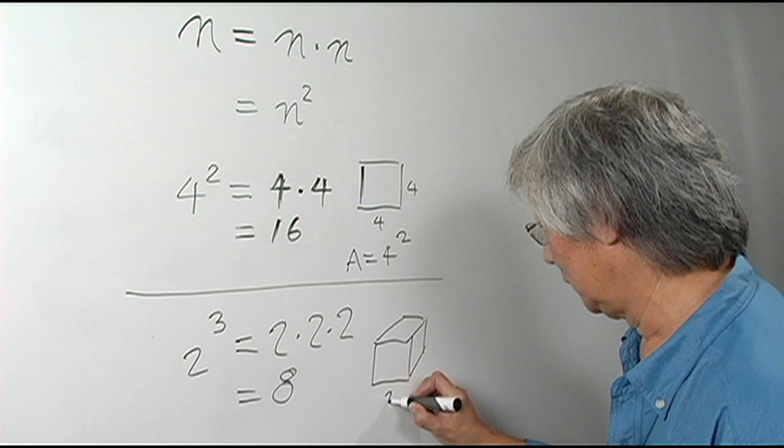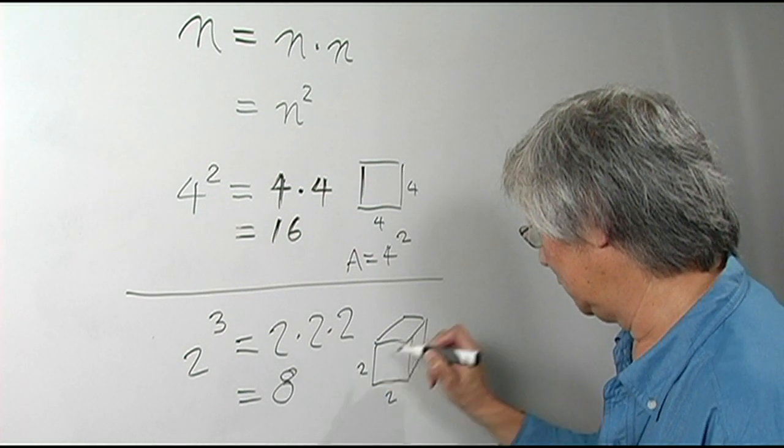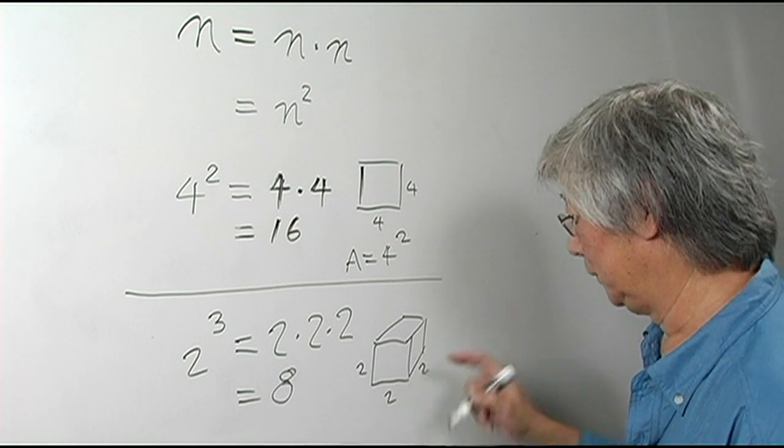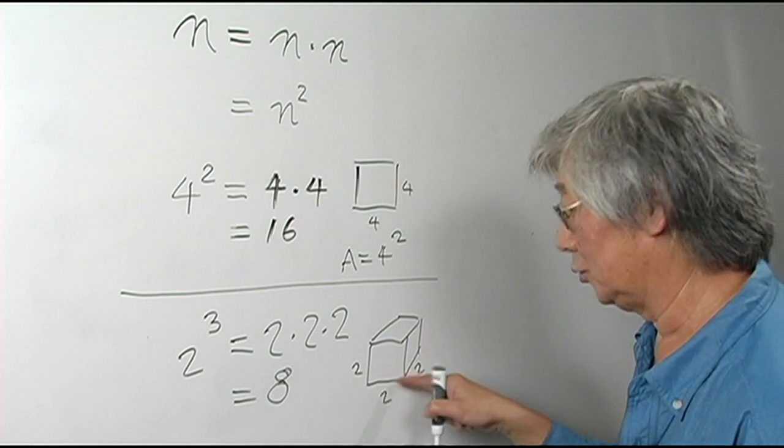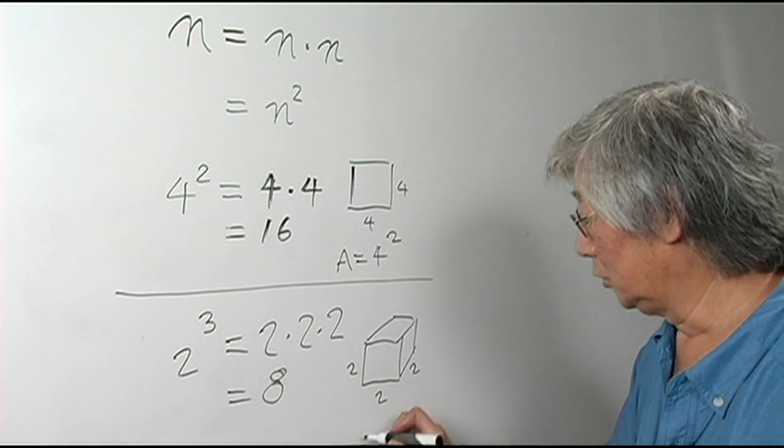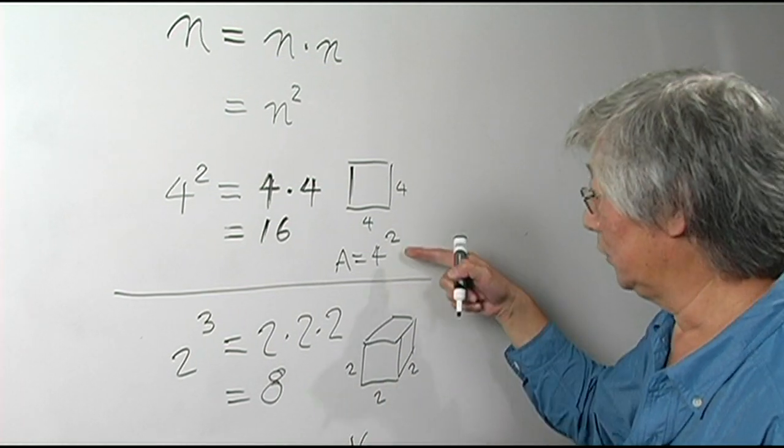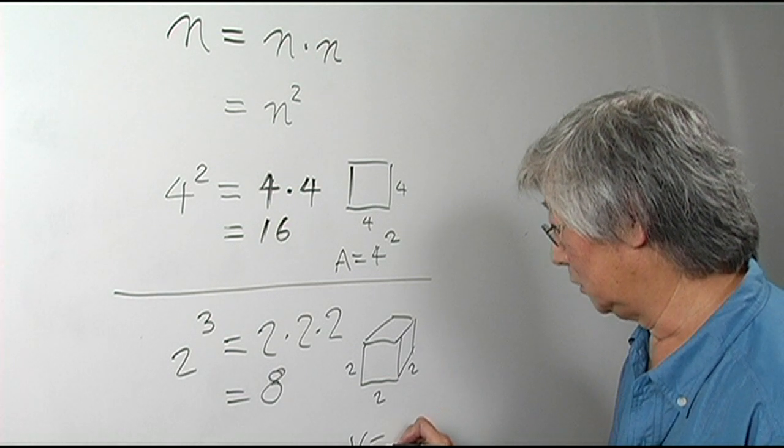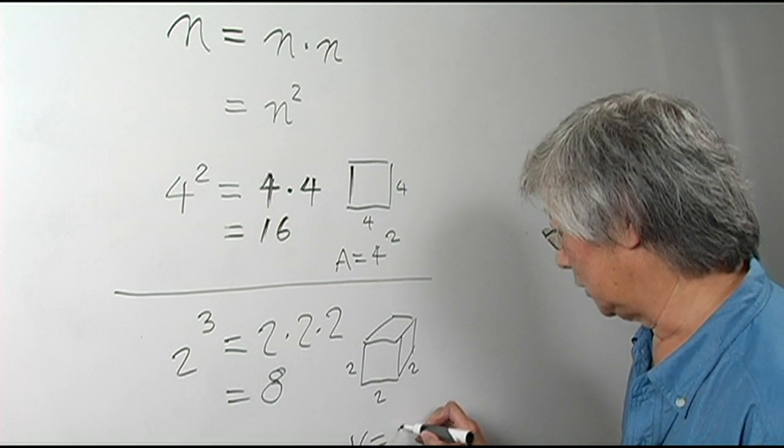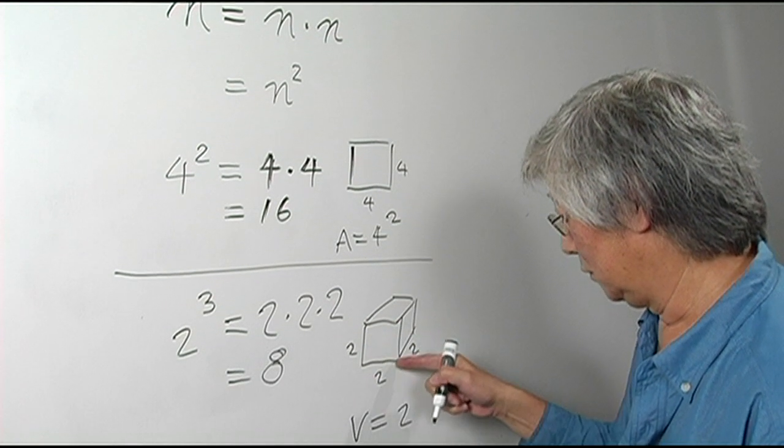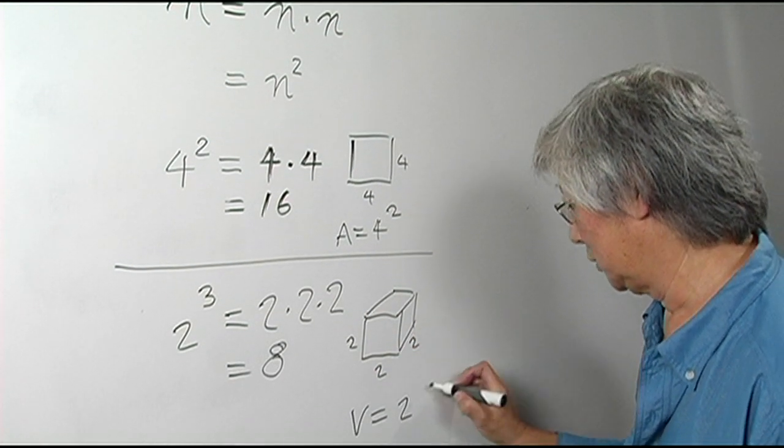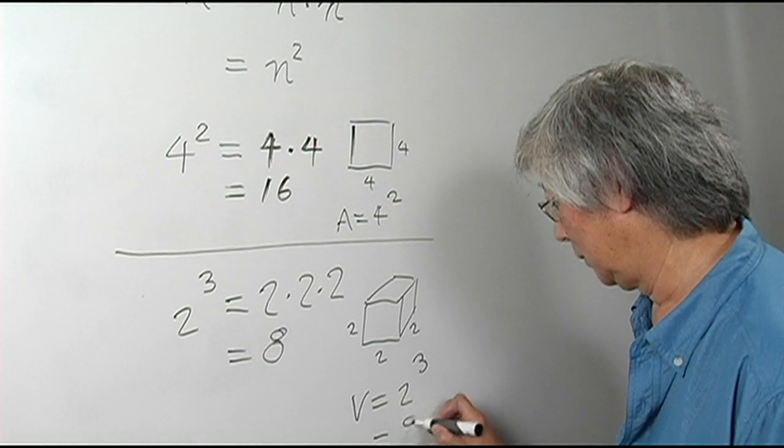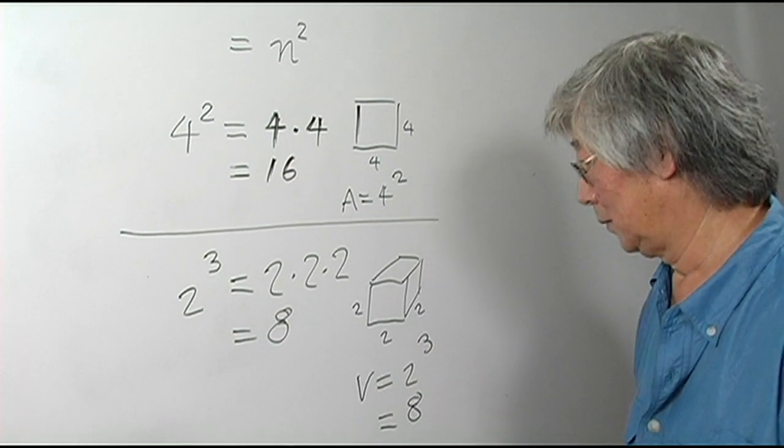And each side of this cube has 2 units. So the volume—previously we talked about area, now we're talking about volume—volume is 2 times itself 3 times.